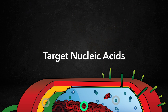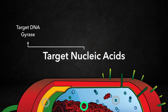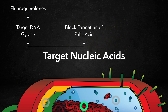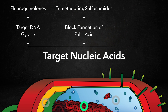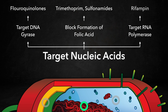The third group includes antibiotics that target nucleic acids. The first subgroup targets DNA gyrase and includes the fluoroquinolones. The second subgroup includes antibiotics that inhibit folic acid synthesis, including trimethoprim and sulfonamides. And the last subgroup targets RNA polymerase and includes rifampin.